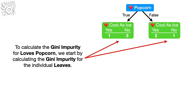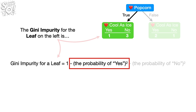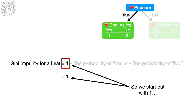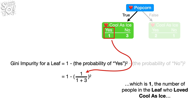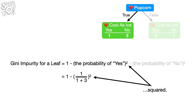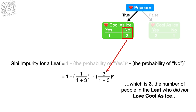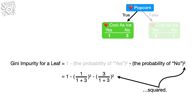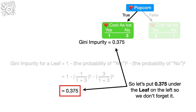Let's start by calculating the Gini impurity for Loves Popcorn. We start by calculating the Gini impurity for the individual leaves. The Gini impurity for the leaf on the left is: 1 minus the probability of YES squared, minus the probability of NO squared. We subtract the squared probability of someone loving Cool as Ice — which is 1 divided by 4, squared — then subtract the squared probability of not loving Cool as Ice — which is 3 divided by 4, squared. When we do the math, we get 0.375. Now let's calculate the Gini impurity for the leaf on the right, and we get 0.444.